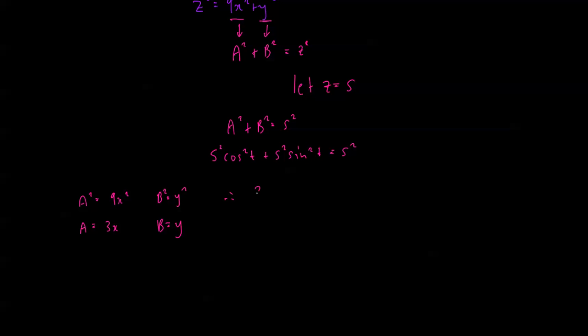Okay, so therefore, if that's a squared, it's also equal to s squared cos squared t. So a is going to be equal to s cos t, and b is also going to be equal to s sine t. So 3x is equal to s cos of t, and y is equal to s sine t.